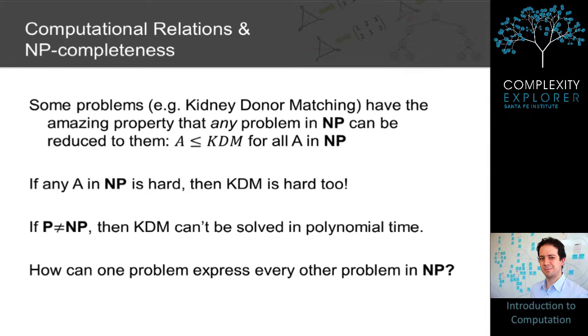In particular, this means that if any problem in NP is difficult, then so is kidney donor matching. Or more precisely, if P is not equal to NP, then kidney donor matching can't be solved in polynomial time.